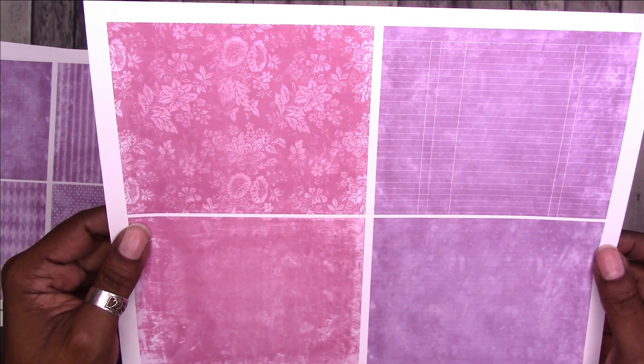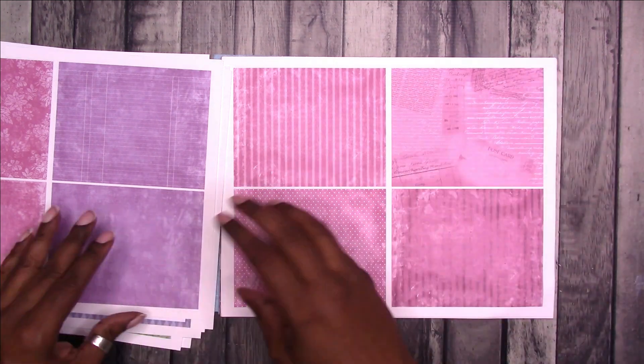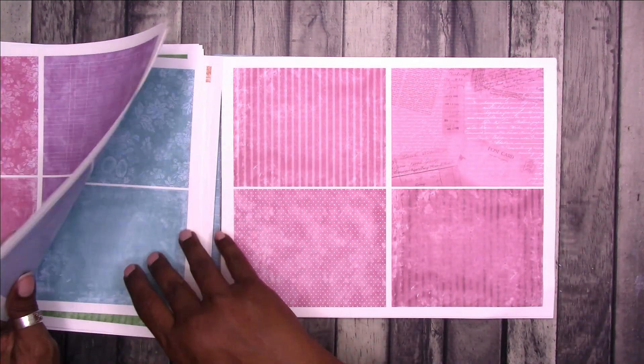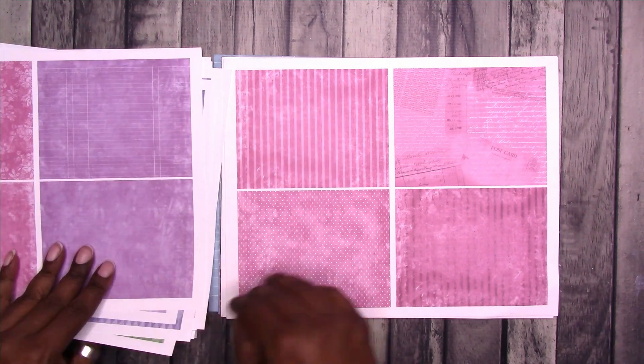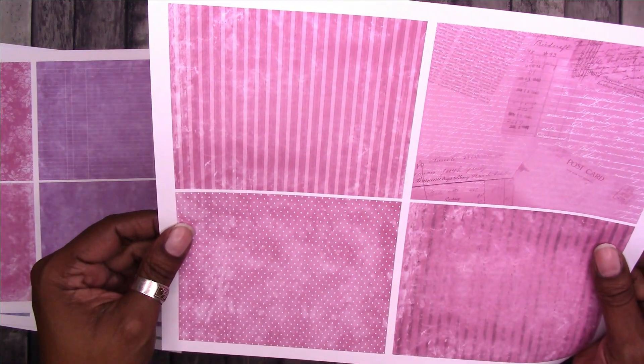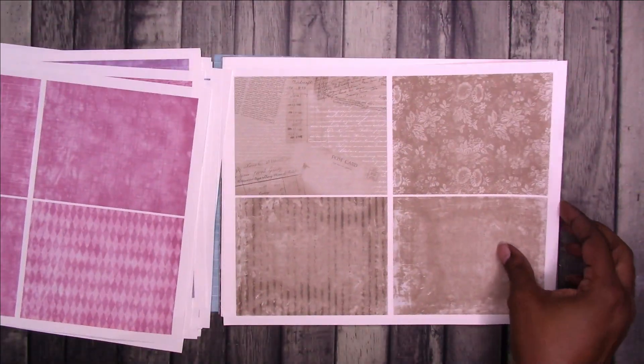And I printed these on 32 pound paper. And then this is another pinky version. It's a little different from the original red. See the difference there? So it's kind of like another pinky purple version. Fuchsia maybe would be a better term.